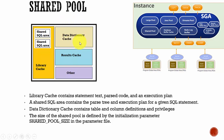All those data dictionary tables and views are stored in the Data Dictionary Cache. Oracle Database uses this data dictionary very frequently — almost for executing every SQL statement it has to use the data dictionary. That is why the data dictionary is stored in two places: one copy is maintained in the Data Dictionary Cache and the other copy is maintained in the Library Cache.